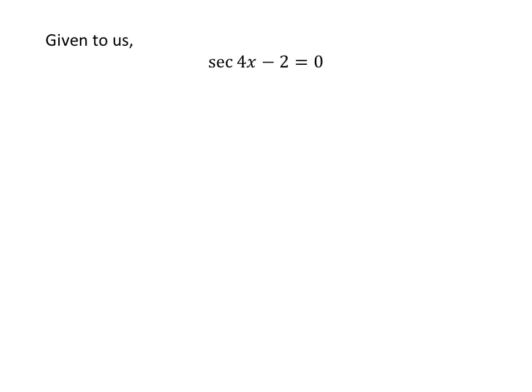We are given sec 4x minus 2 equals 0. Adding 2 to both sides gives us sec 4x equals 2.